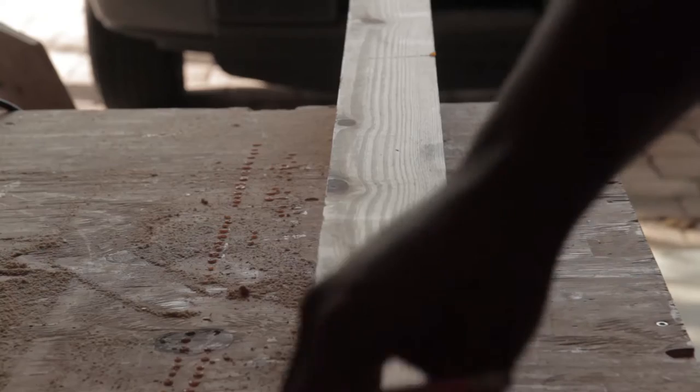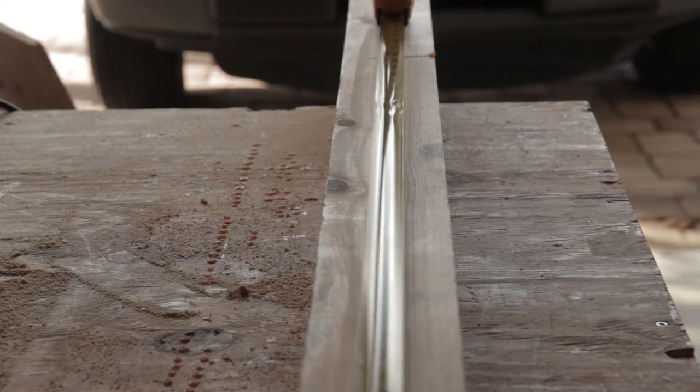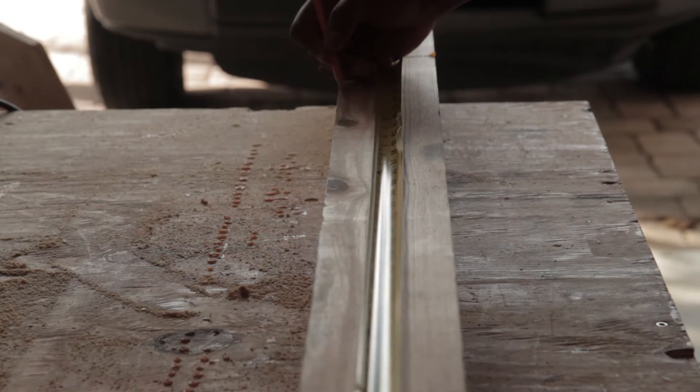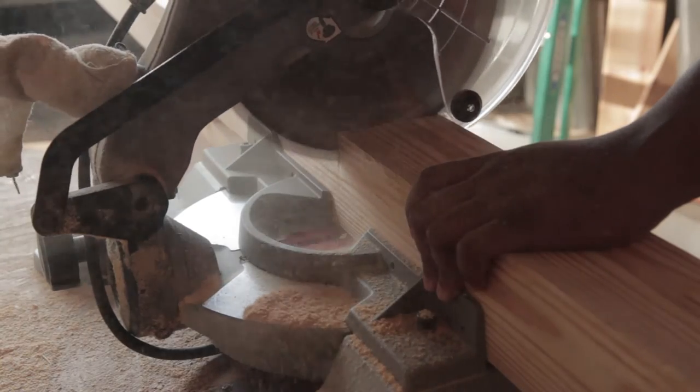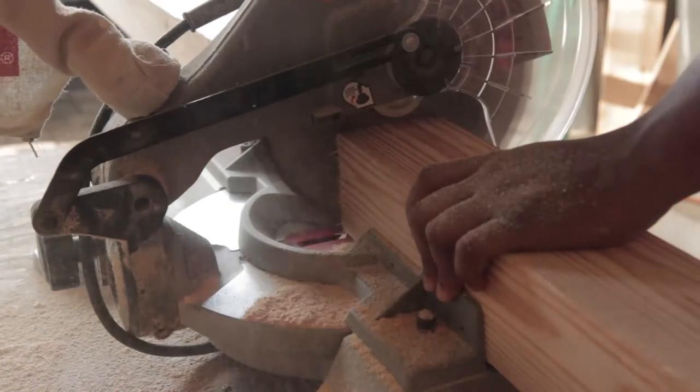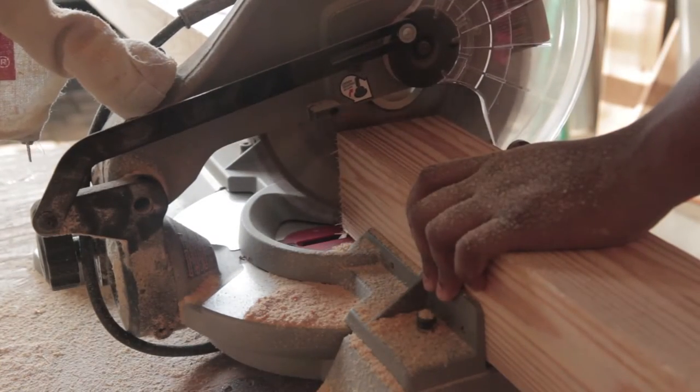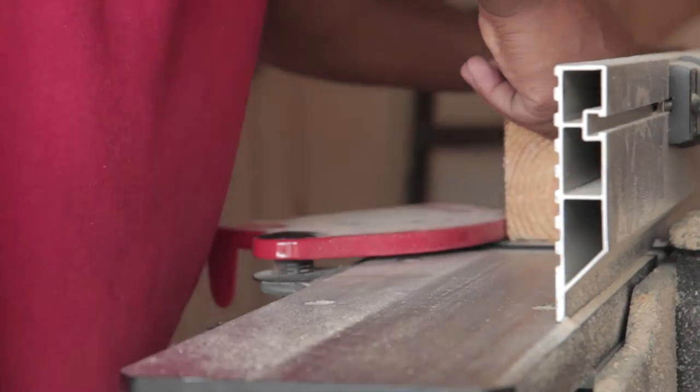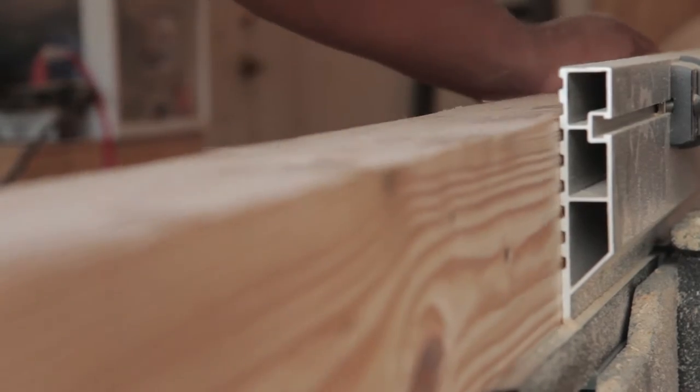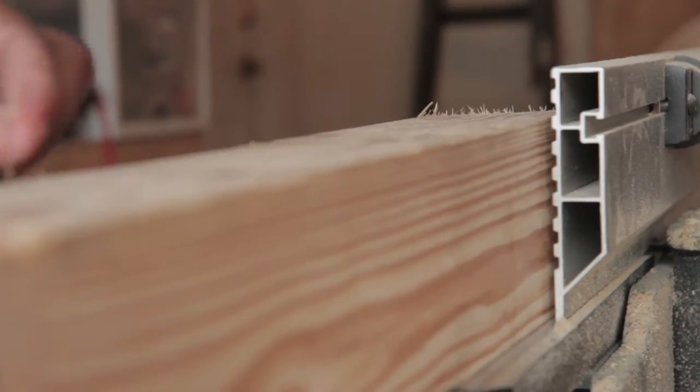The first thing I did was lay out wood and make measurements and cuts so the wood was easier to work with. Then I used a joiner and a planer to flatten the wood on all four sides.